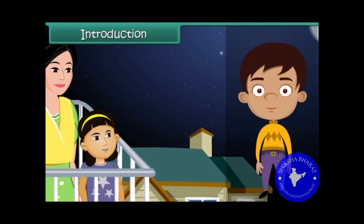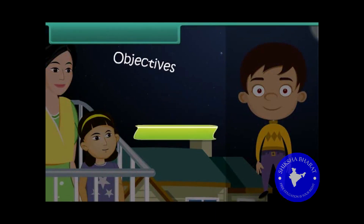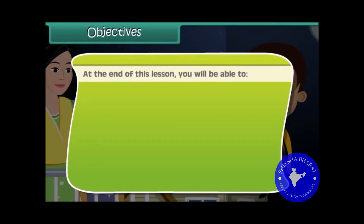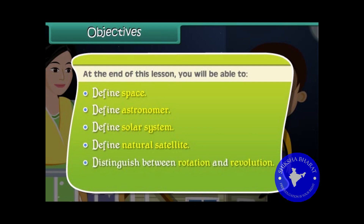In this lesson you will learn about the objects in space. At the end of this lesson you'll be able to define space, define astronomer, define solar system, define natural satellite, distinguish between rotation and revolution, and explain the importance of Earth's atmosphere.